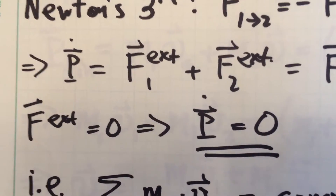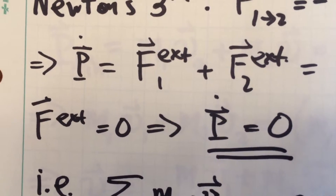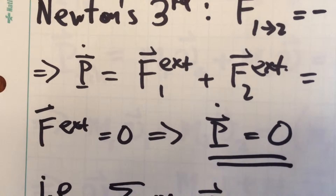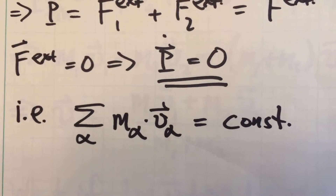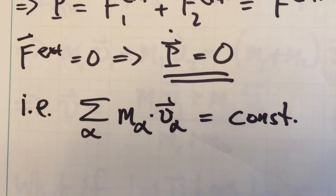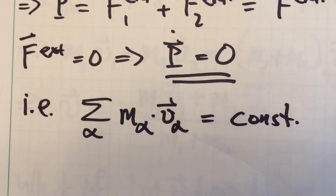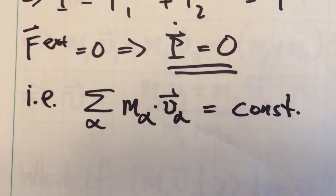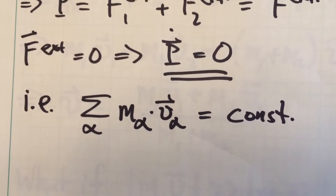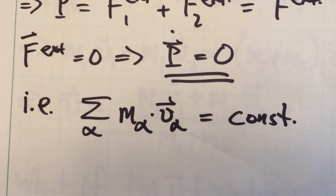As a consequence, if the external forces on our system are zero, then the change in the system's momentum is zero. In other words, the sum over all particles alpha of their momentum vectors — mass of particle alpha times velocity vector alpha — that sum has to remain constant for all time.